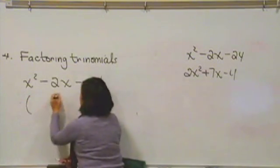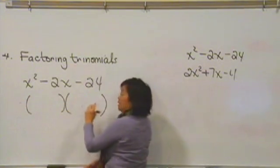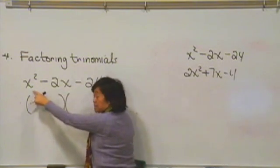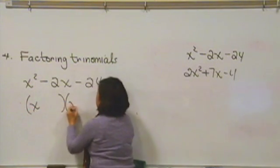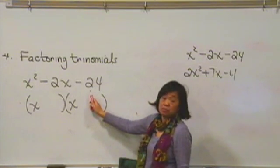We're going to put two parentheses here. And x squared is really easy. The only way to break that up is x and x. And here we're going to try to break up 24.